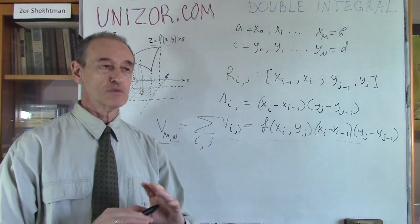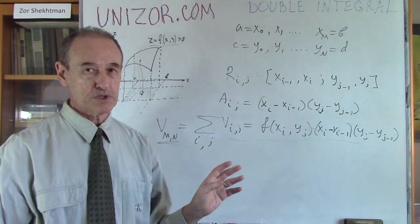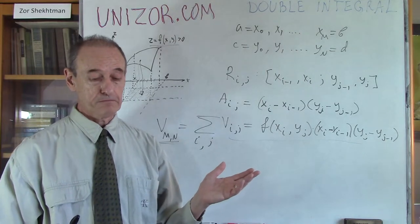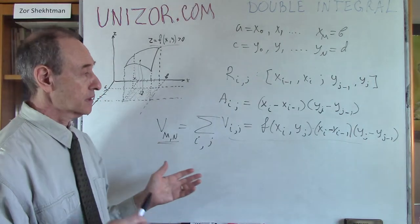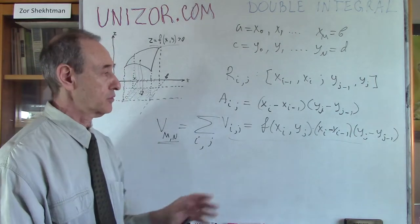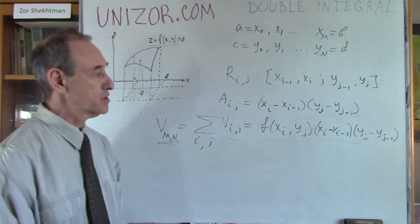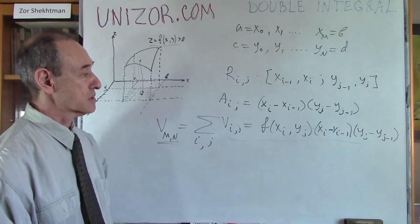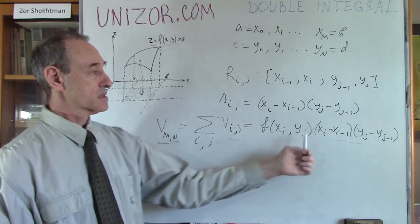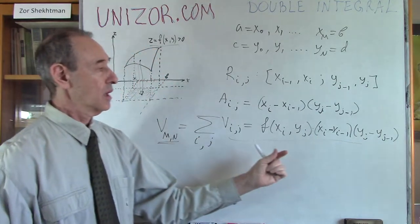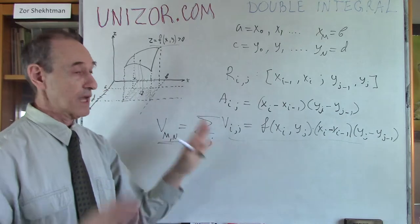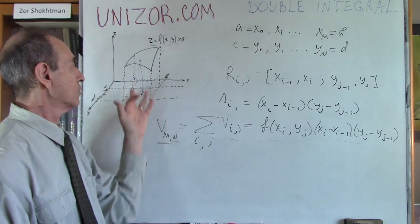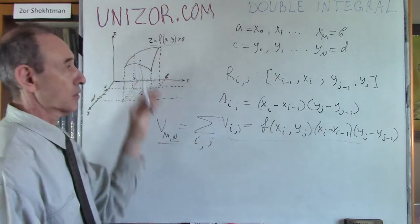...then under certain assumptions about the function f — continuity is sufficient, though there are actually weaker requirements — for all such smooth functions, the limit exists. And that limit will be the volume of the particular figure we are talking about.